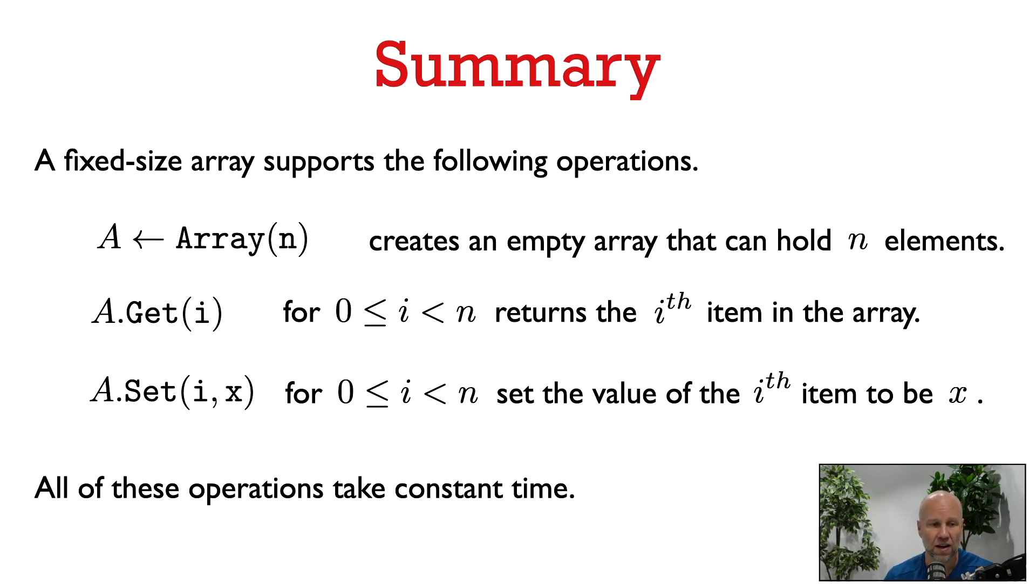So here's the summary of the fixed size array data type. We can do three operations: create an empty array of a specified size, get the ith element of the array, and write to the ith element of the array. And we've seen how we can implement all of these operations in constant time.